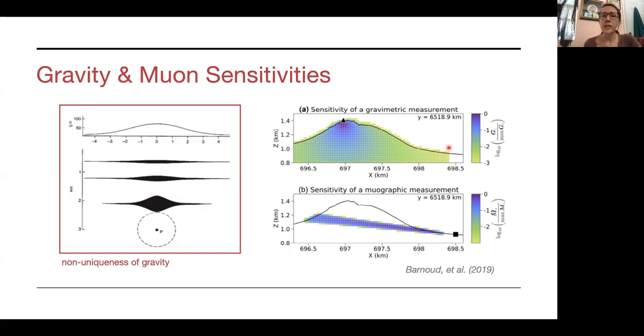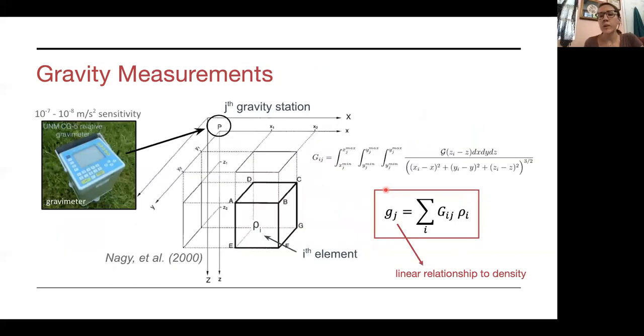Muons, on the other hand, so this is a picture of the sensitivities of the gravity measurements and a muographic measurement. The gravity measurement, as we know, it's got that one over r squared relationship. So it's got a very broad reaching sensitivity. However, the muographic measurement is limited to the acceptance range of the detector. So we know gravity on its own is not good because of this non uniqueness problem, and muons on their own aren't sufficient because of this narrow scope that they have. But together, they actually have like a nice complimentary, they have complimentary sensitivities. And also, as you'll see in a second, they're both linearly proportional to density.